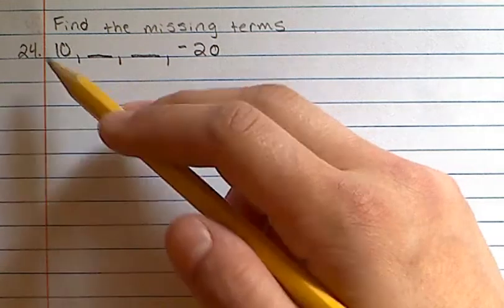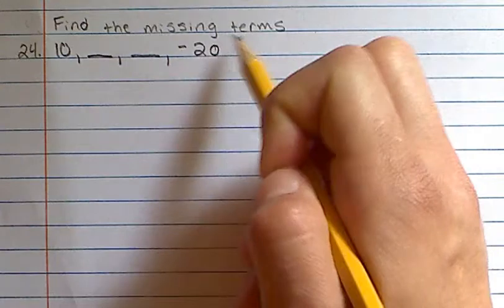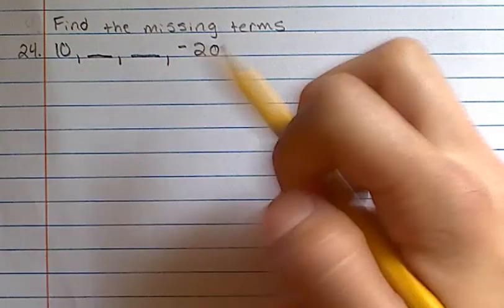For this problem, we have an arithmetic sequence and we need to find the missing terms between 10 and negative 20.